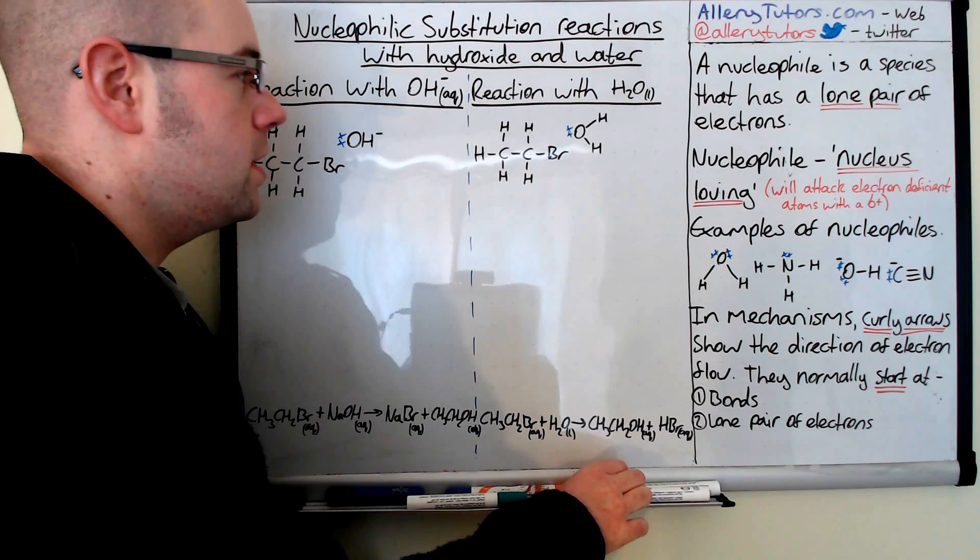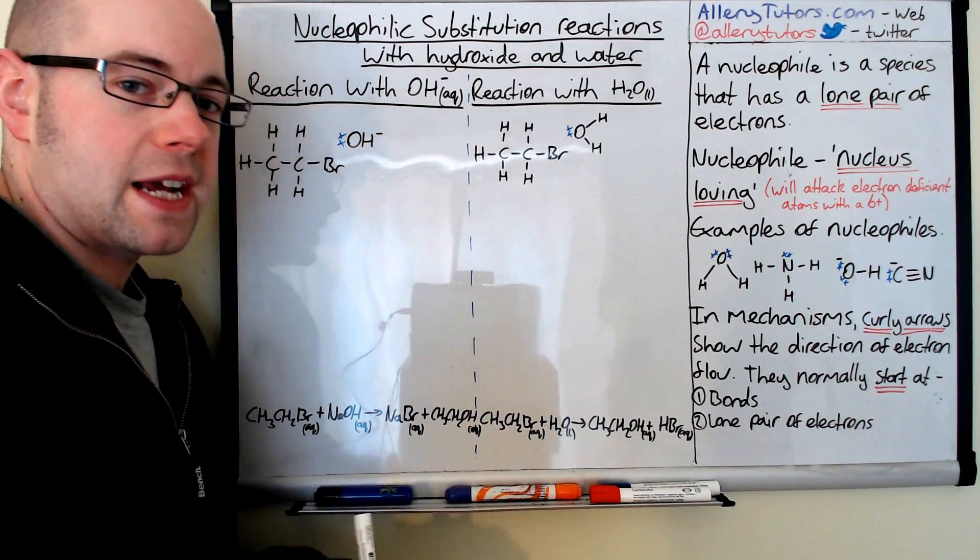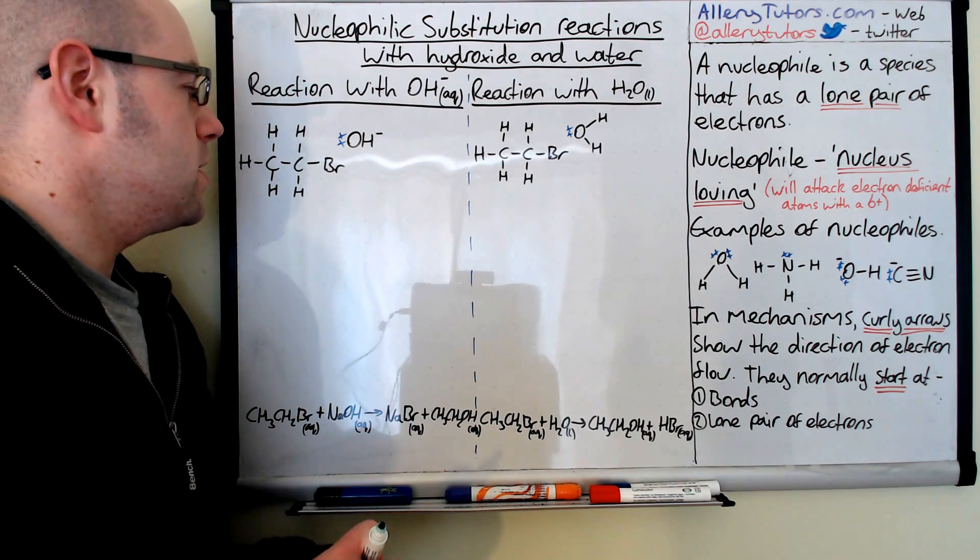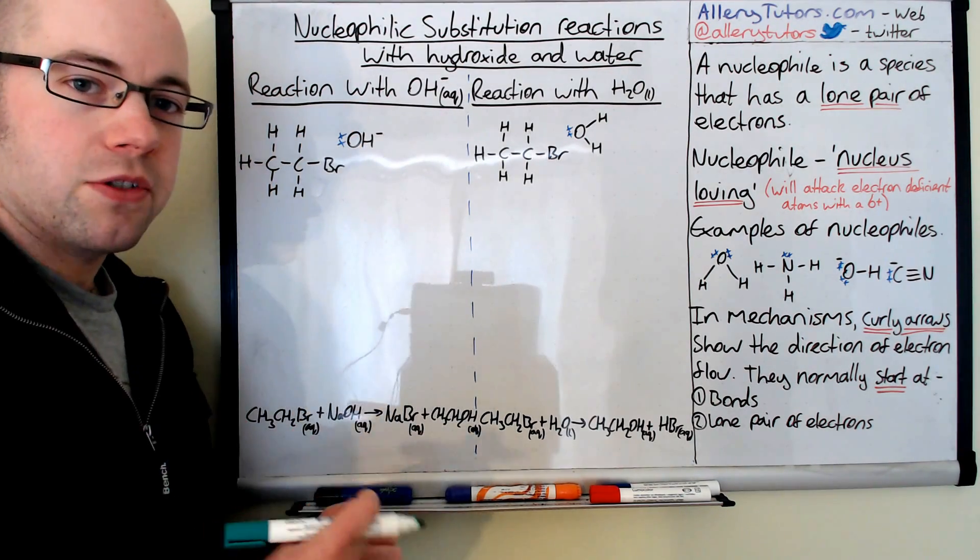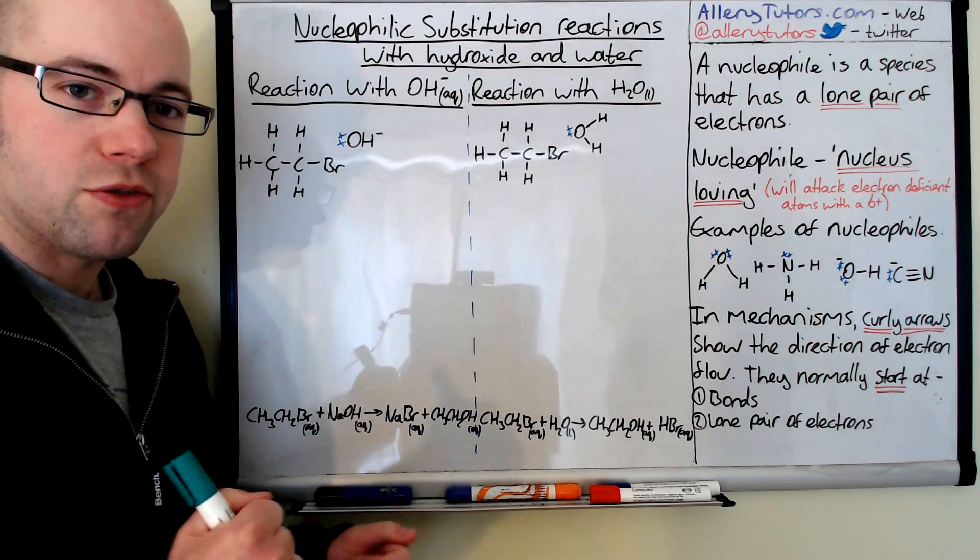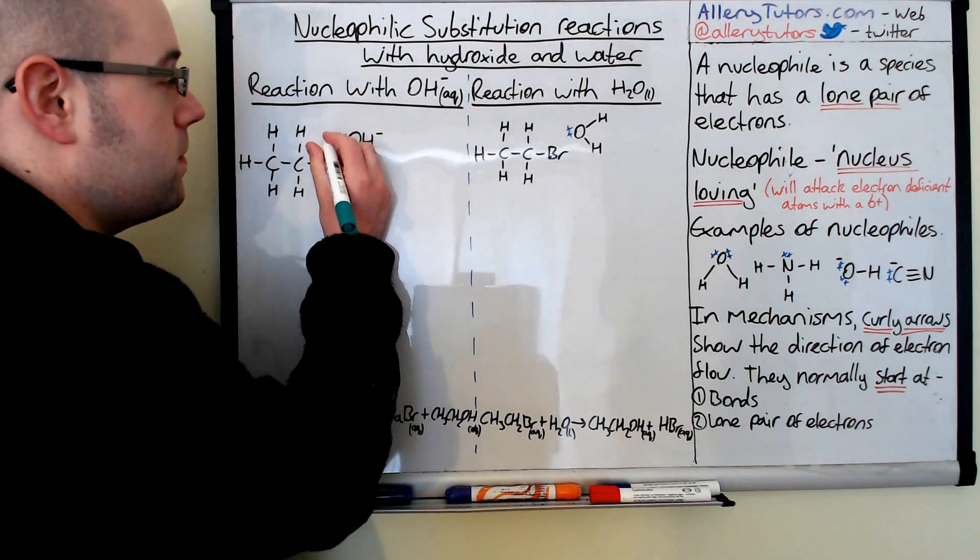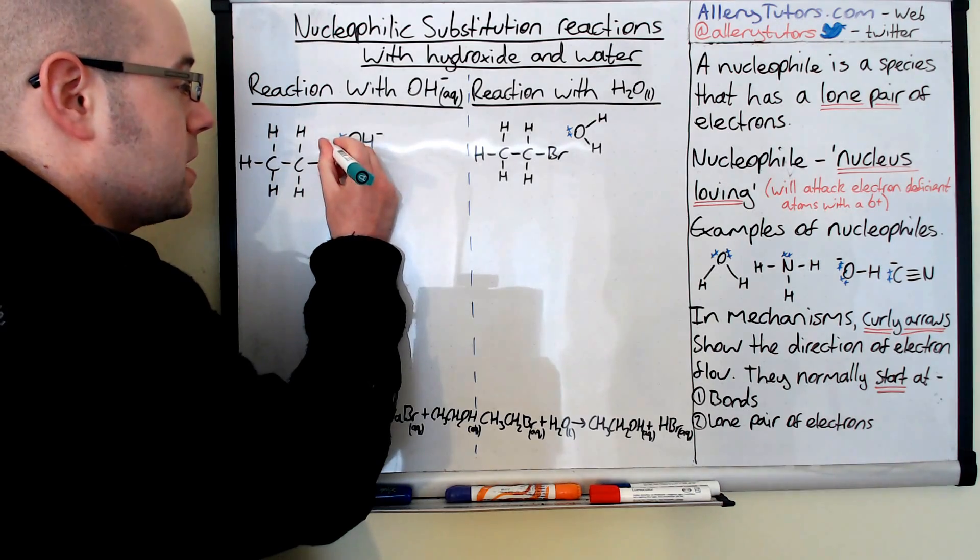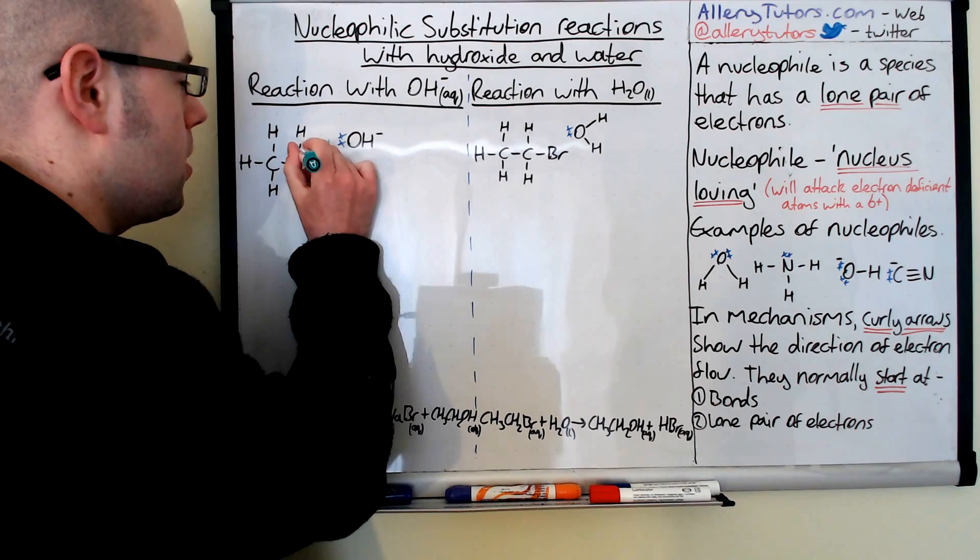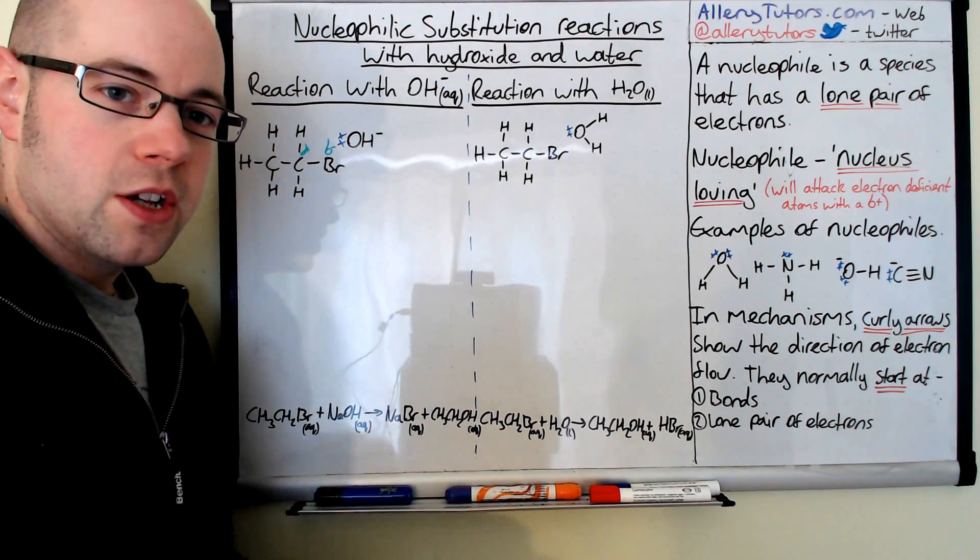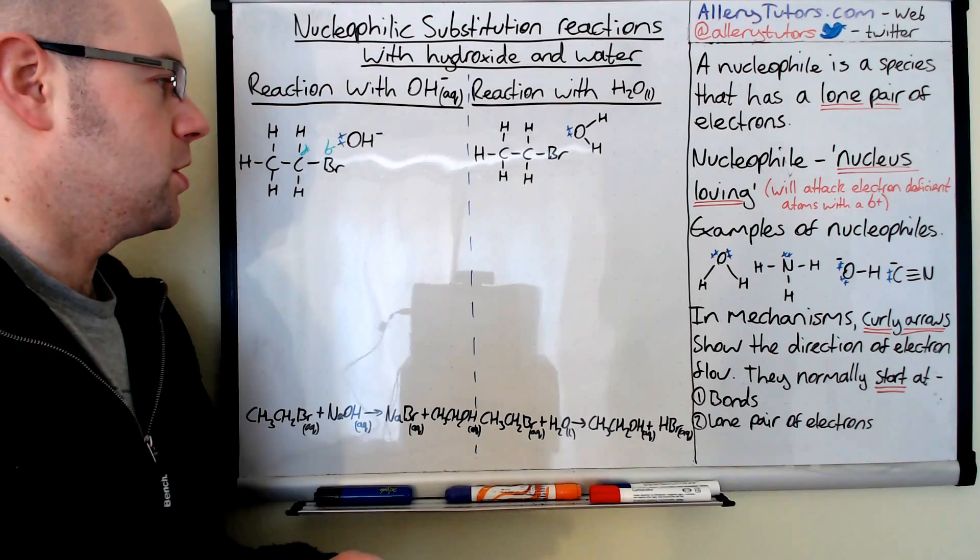The first thing we need to do is we need to write down where our delta positive and delta negative charges are. On this molecule, on the haloalkane, because halogens are very electronegative, which means they pull electrons towards themselves in a covalent bond, effectively what happens is it develops a delta negative charge because it's pulling the electrons closer to itself, which leaves the carbon with a delta positive charge. It's really important that you're able to identify the polarity in the molecule as well.